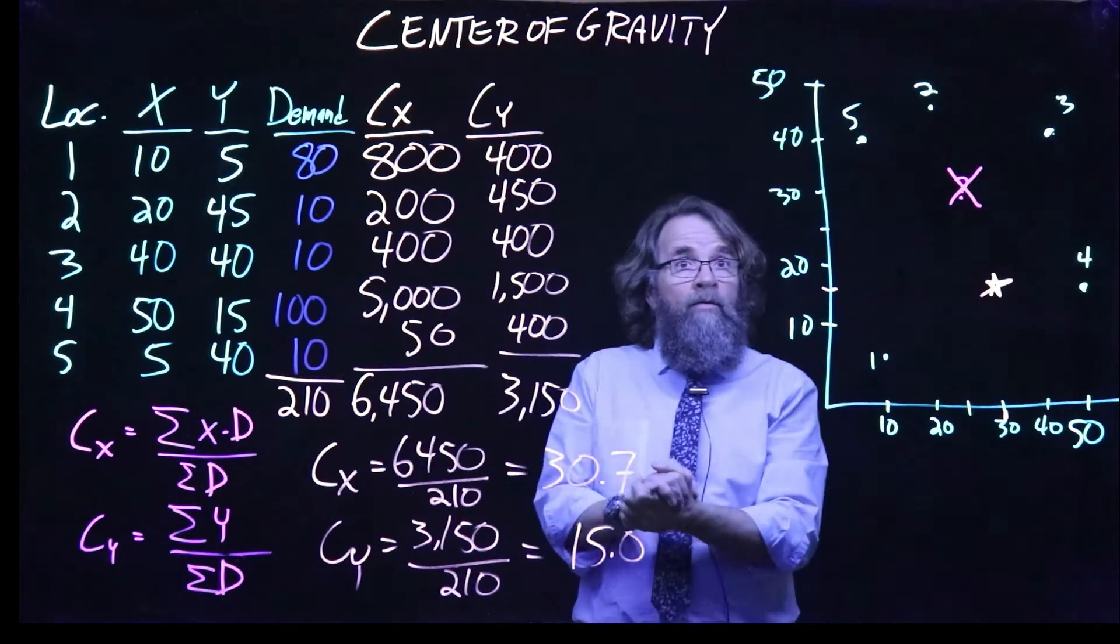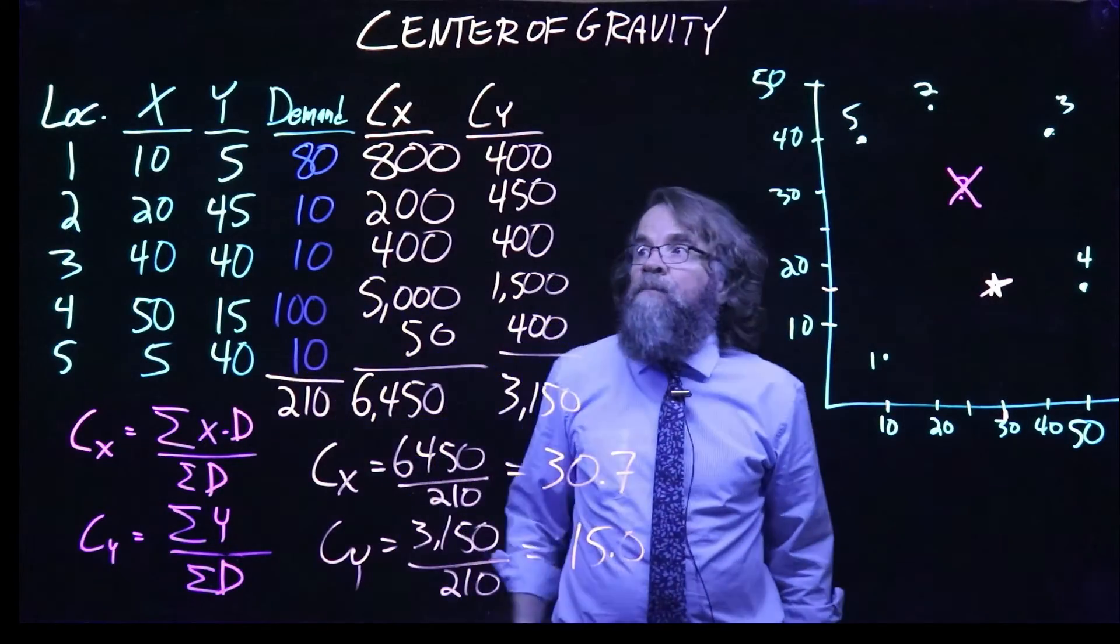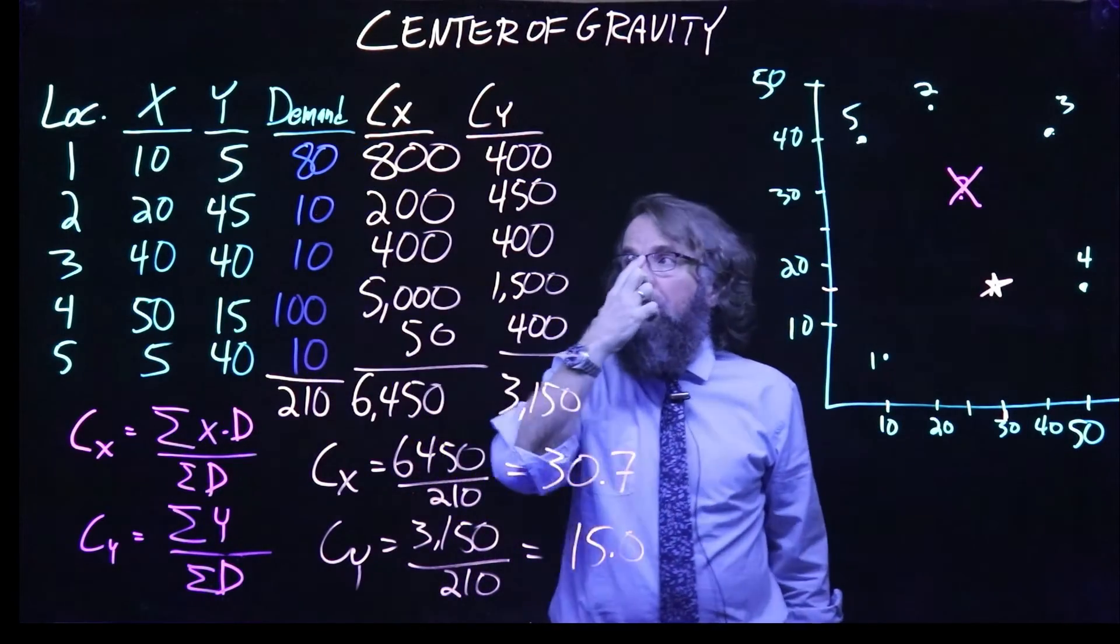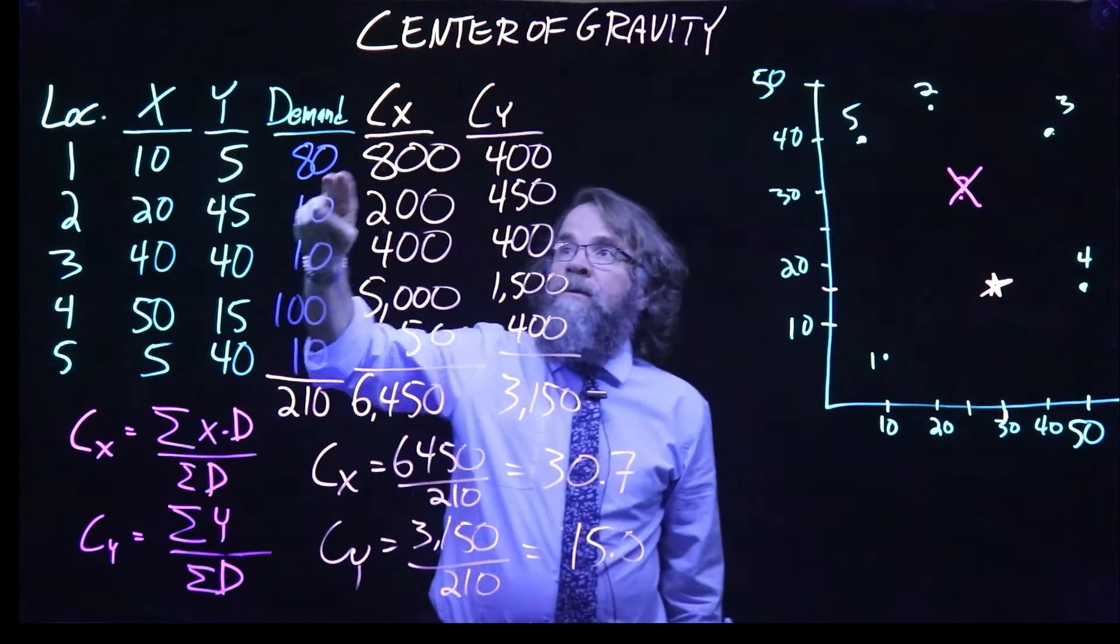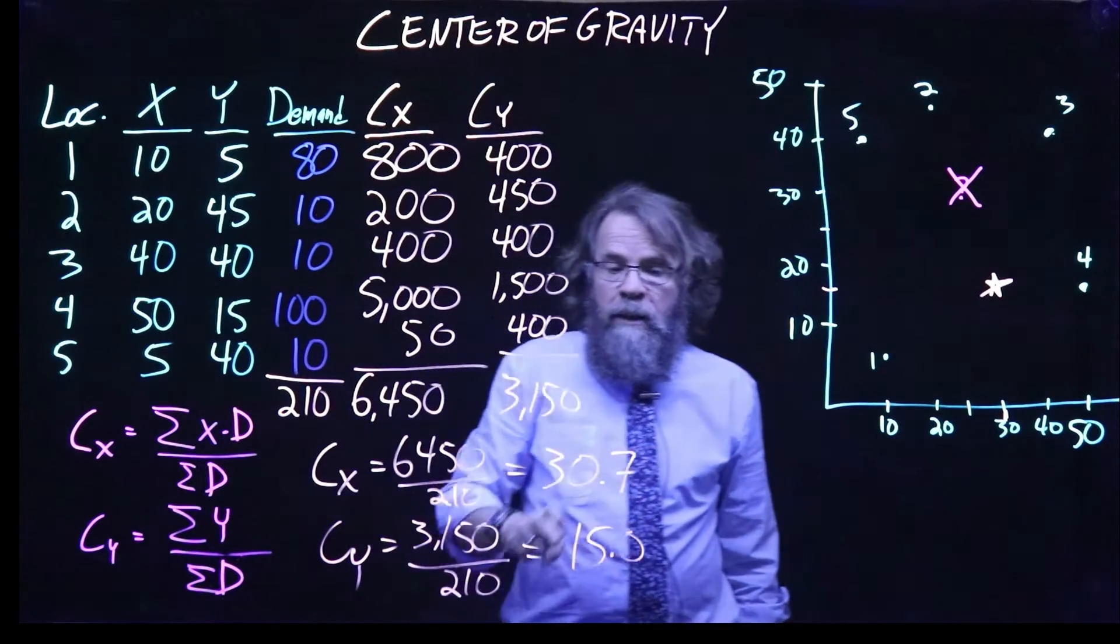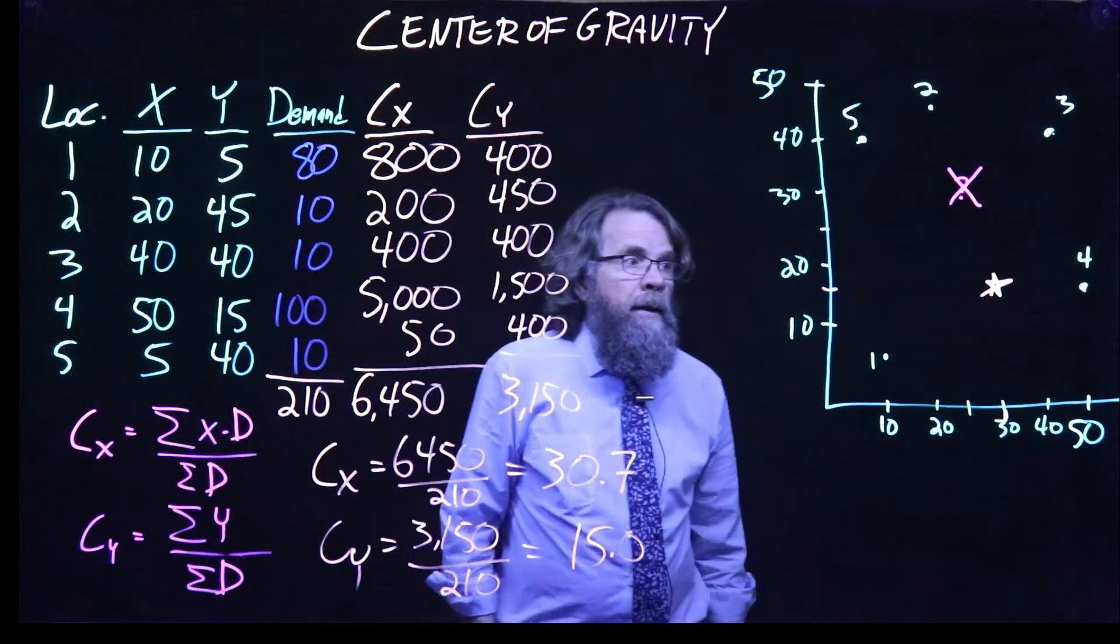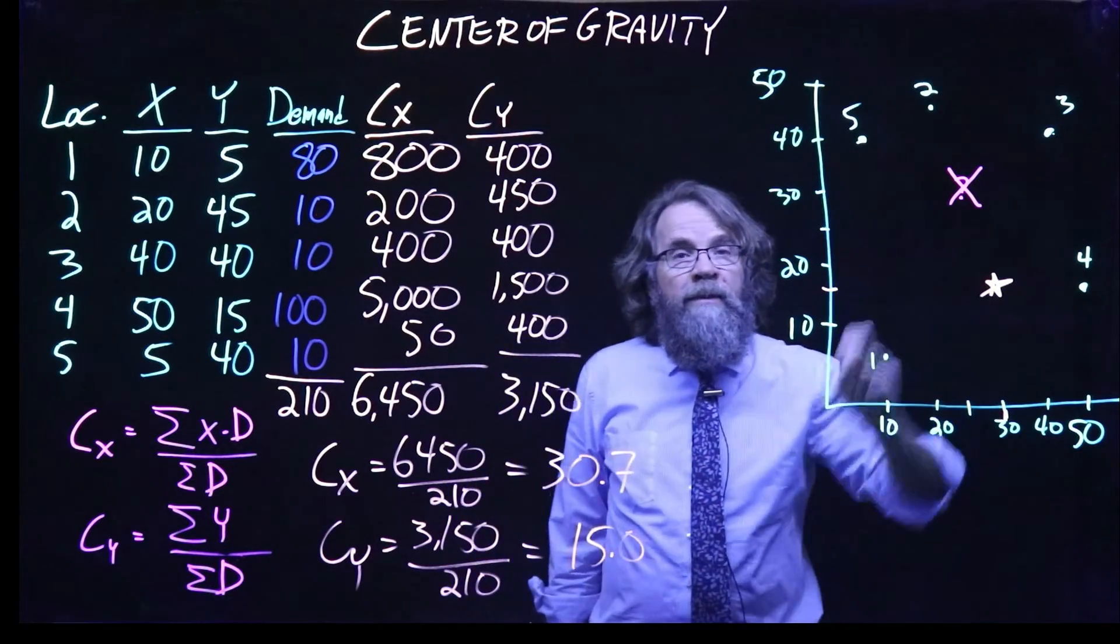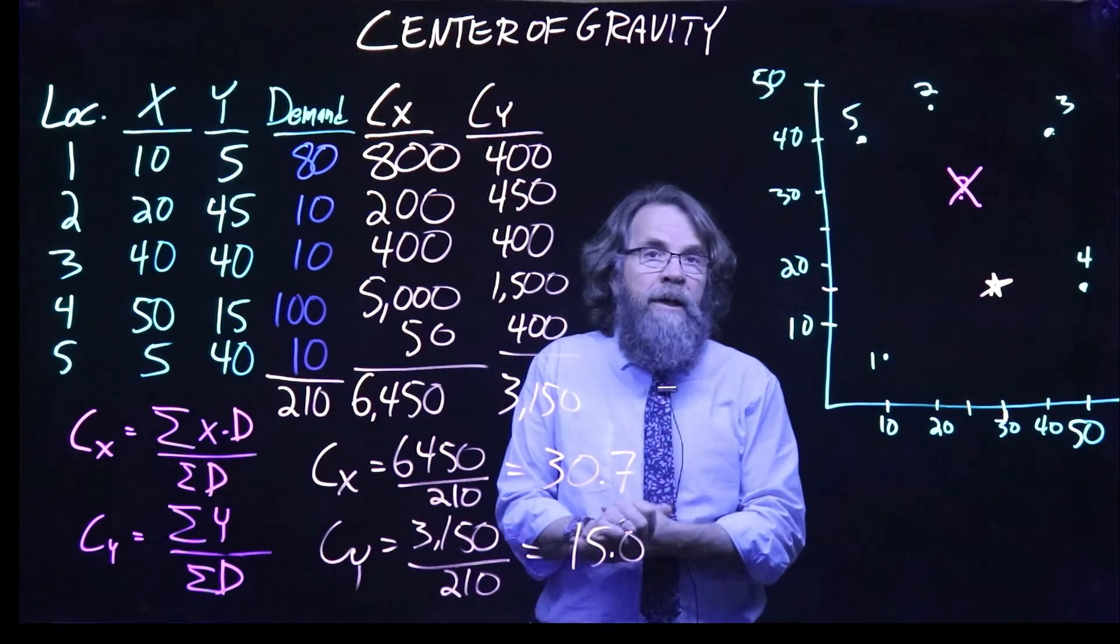Don't do it that way. So to summarize, we've got an X and a Y location for everything. We've got a demand for each location. Take the X coordinate times the demand, add those up. Y coordinate times the demand, add those up. Take those totals, divide by the total amount of demand. That gives you the X coordinate and the Y coordinate. And that's where we should put our facility to minimize the average travel distance to satisfy our customers.